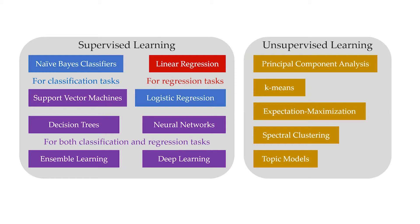This course covers both supervised learning and unsupervised learning. In supervised learning, we will elaborate techniques that solve the two main tasks, namely regression and classification. These techniques include linear regression, logistic regression, naive Bayes classifiers, decision trees, one-sample learning, neural networks, deep learning, and more.